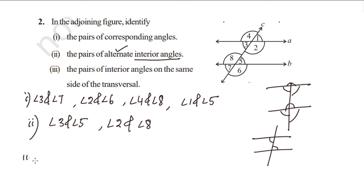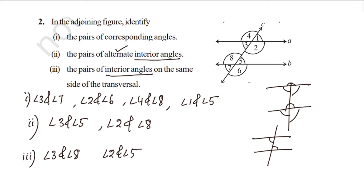The pairs of interior angles on the same side of the transversal are: angle 2 and angle 5, and angle 3 and angle 8. Thank you.